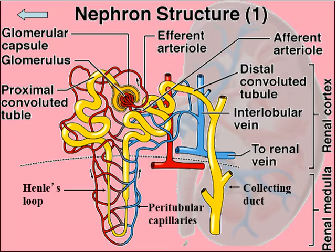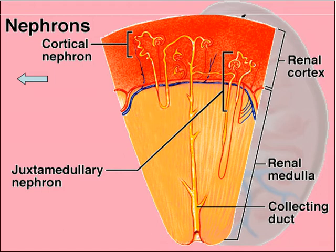The proximal convoluted tubule leads to Henley's loop, which includes both a descending limb and an ascending limb. The ascending limb then leads to the distal convoluted tubule, which leads to the collecting duct, and the collecting duct empties into the calyces, pyramids, and pelvis. The Bowman's capsules are located in the cortex — that's why the cortex appears granular — and the loops of Henley and collecting ducts pass down through the medulla, making it appear striated.